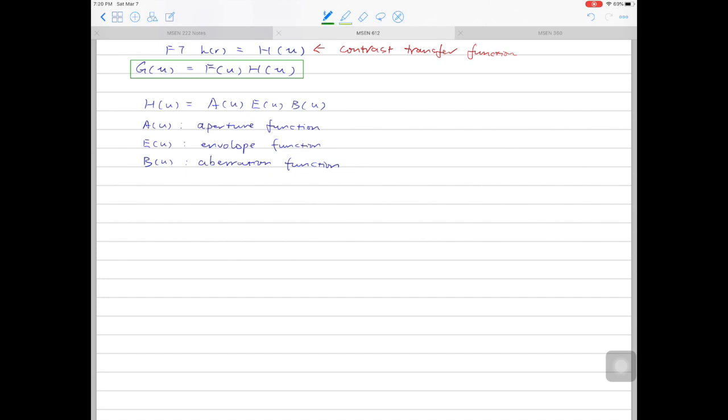The aberration function B(u) can be written down as exponential i chi(u). Then the chi function, the chi(u), is written down as pi delta f lambda u square plus half pi Cs lambda cubed u to the power of 4.